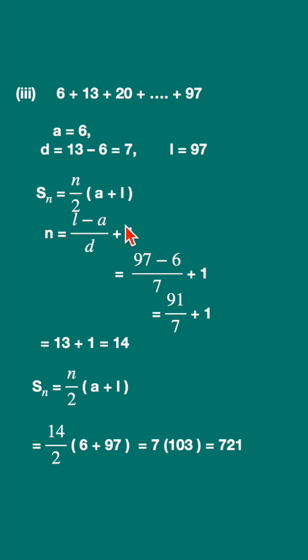Once you found the number of terms, you can use this formula and find the sum of the terms, which is 721.